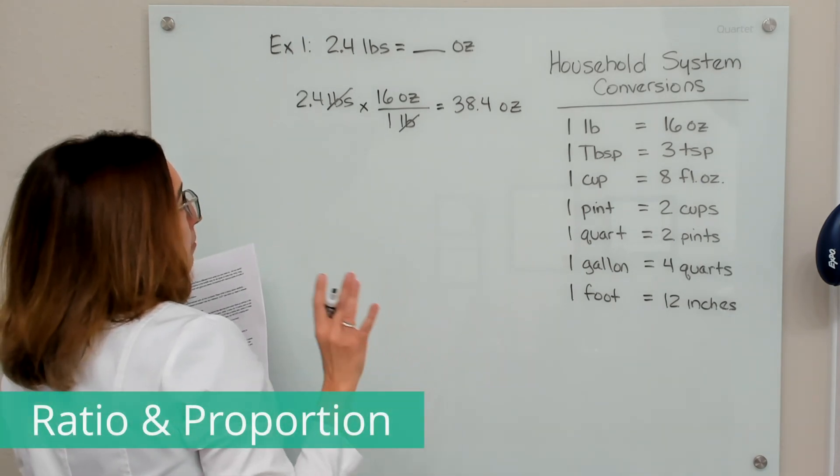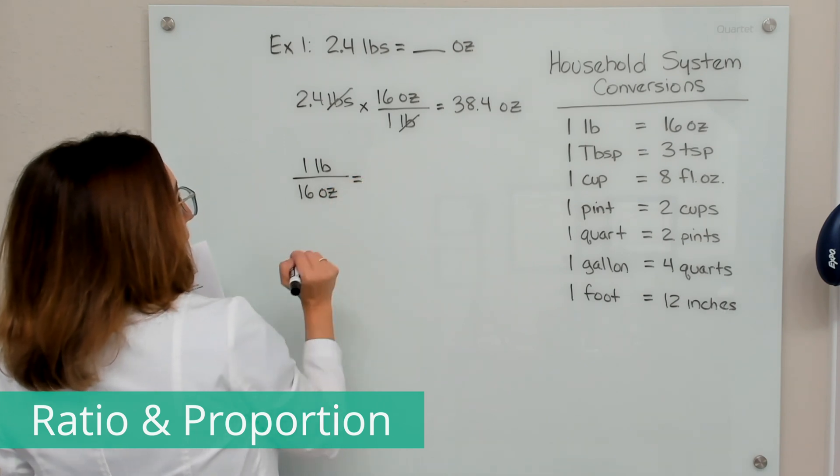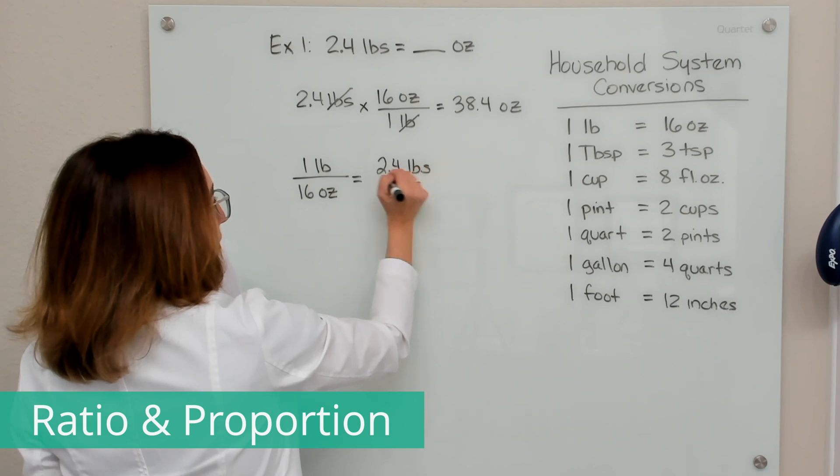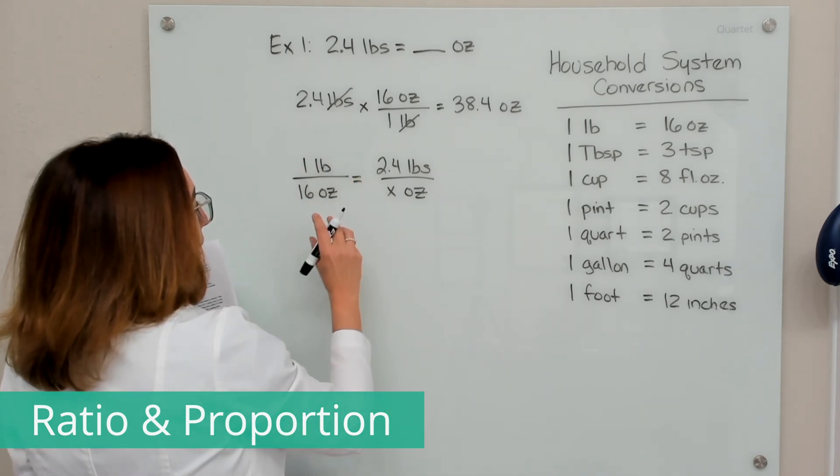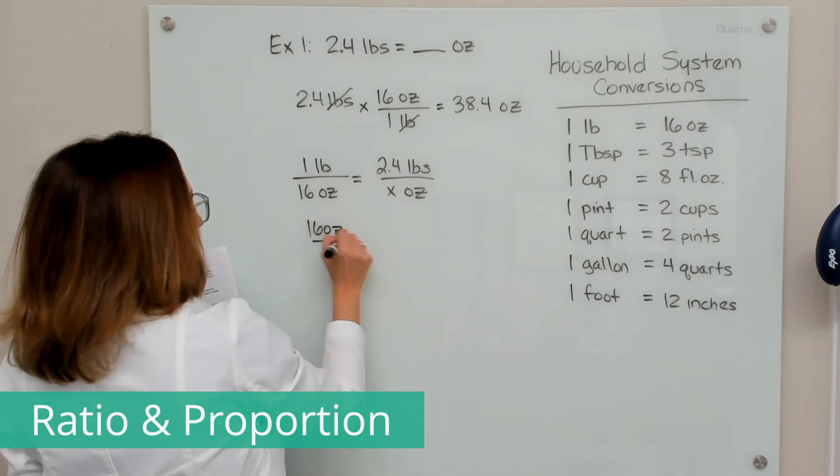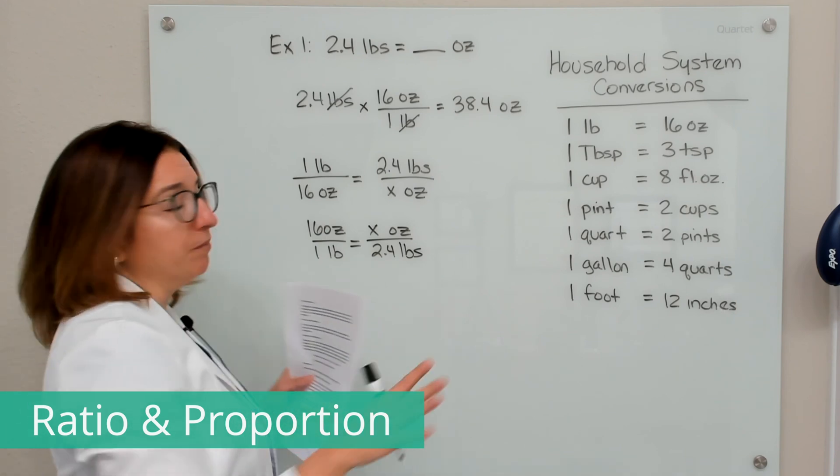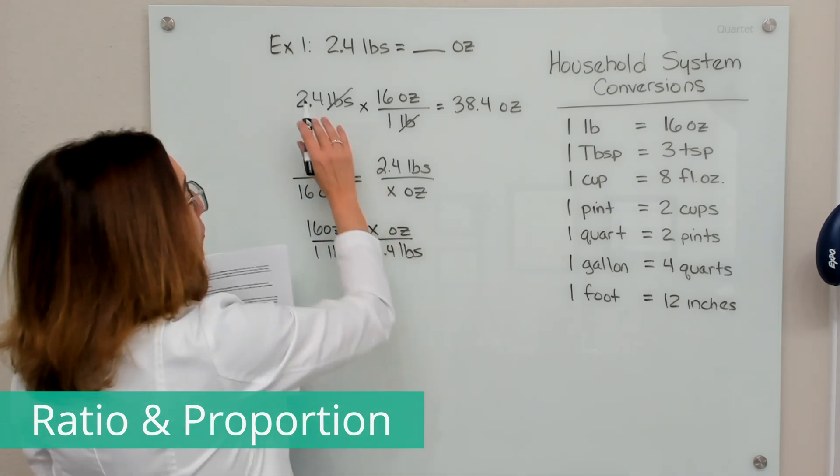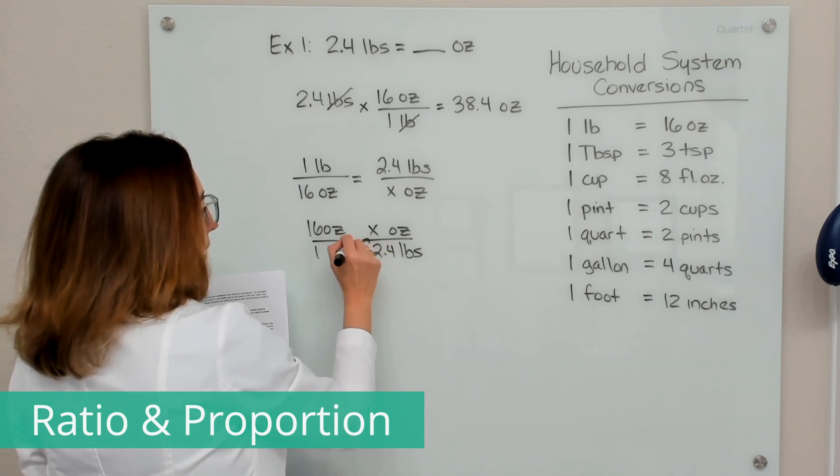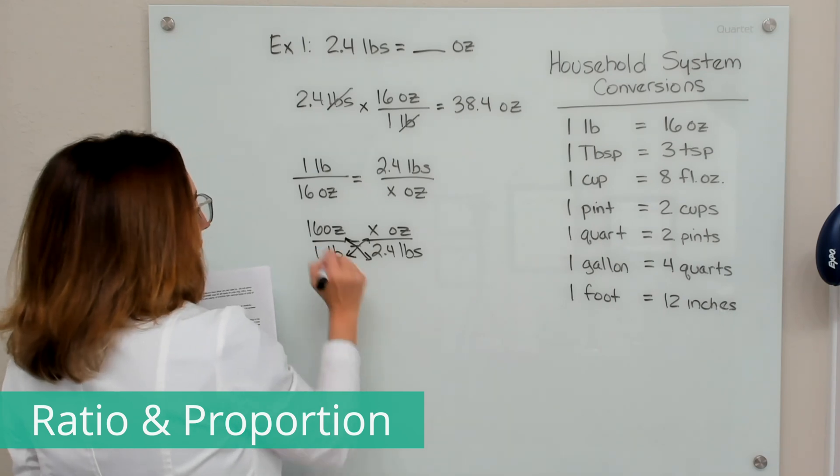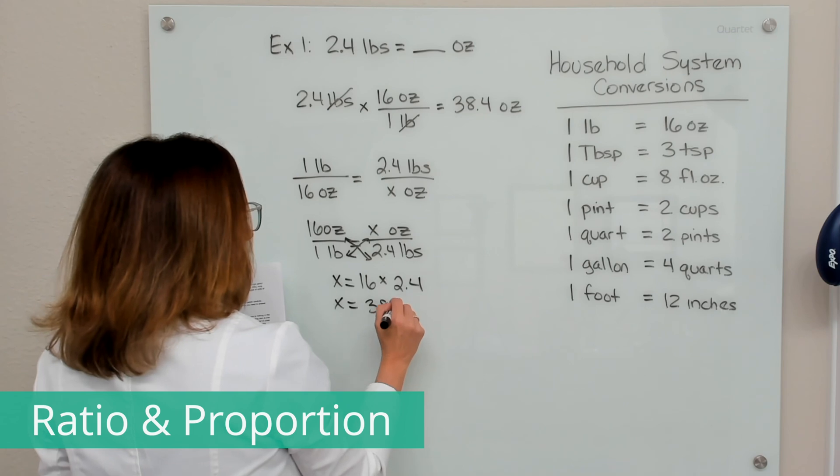Let's solve it now with ratio and proportion. So we're going to put our known ratio down first, so 1 pound equals 16 ounces. And we want to know for 2.4 pounds, how many ounces is that? So the X is our unknown value. And I could have set this ratio up kind of flipped. So I could have said 16 ounces over 1 pound equals X ounces over 2.4 pounds. That would be fine too. That's the benefit of ratio and proportion is that you have that flexibility. With dimensional analysis, things have to be set up just so in order for it to be correct. So now we are going to do our cross multiplication. So X times 1 is just X. And then we have 16 times 2.4. And if we multiply this out, we end up with the same answer, which is 38.4 ounces.